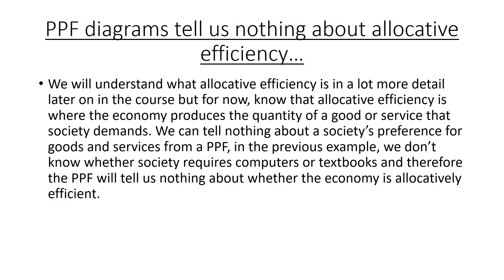You need to know whether you can tell anything about the level of allocative efficiency within an economy from a PPF diagram. Allocative efficiency means that an economy is producing the goods and services that society needs in the right quantity. From a PPF diagram, we can't actually say anything about what society wants us to produce or the correct quantities society wants. Therefore, PPF diagrams tell us absolutely nothing about the level of allocative efficiency within an economy.